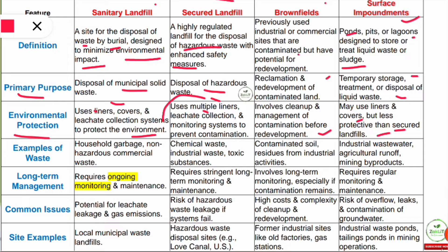Examples of waste for each type: sanitary landfills handle household garbage and non-hazardous commercial waste. Secured landfills handle chemical waste, industrial waste, and toxic substances — hazardous waste categories. Brownfields deal with contaminated soil and residues from industrial activities. Surface impoundments handle industrial wastewater, agricultural runoff, and mining by-products — all in liquid form.